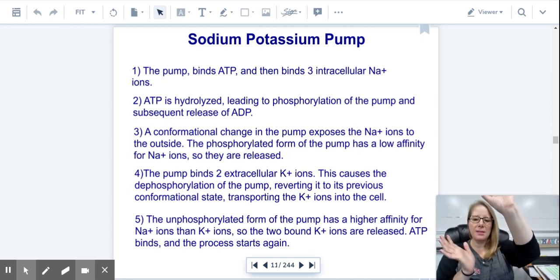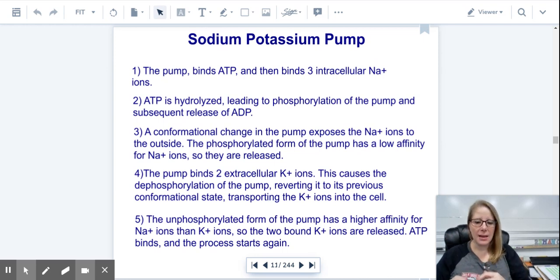Then the pump changes shape, and those three ions get pumped out. When that happens, then two potassiums bond, and it changes shape again and lets it in, transporting them in. The unphosphorylated form of the pump has a higher affinity for sodium ions than potassium ions. So the two bound potassium ions are released. ATP binds, and the process starts again.